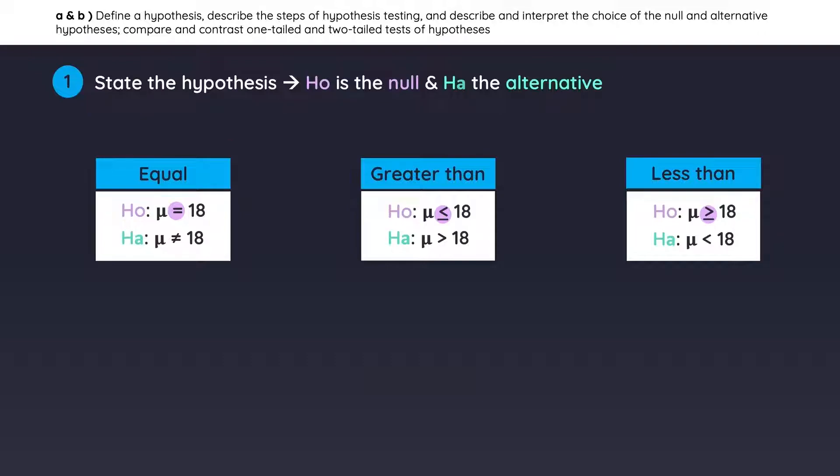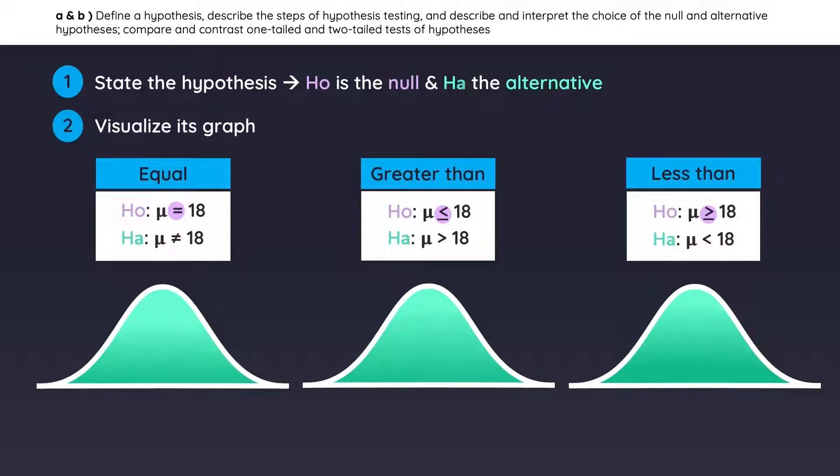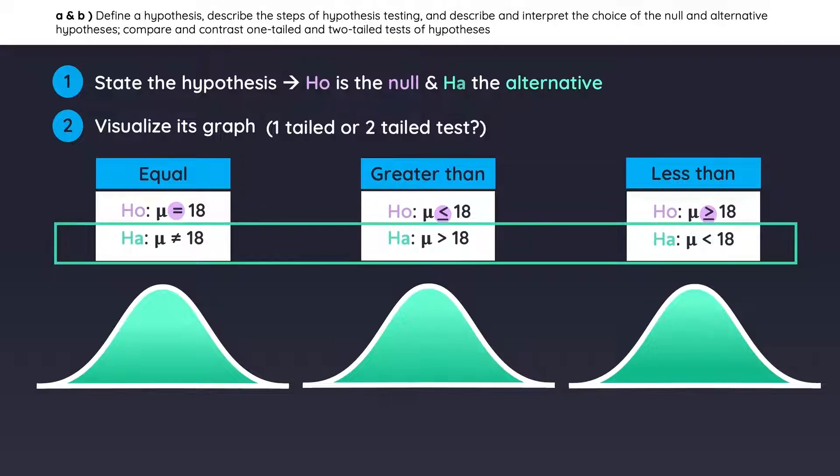Great! So, once you state the hypothesis, step number two is to visualize the graph to avoid making mistakes. Ask yourself, is it a one-tailed test or a two-tailed test? The easiest way to know is by looking at the alternative hypotheses.